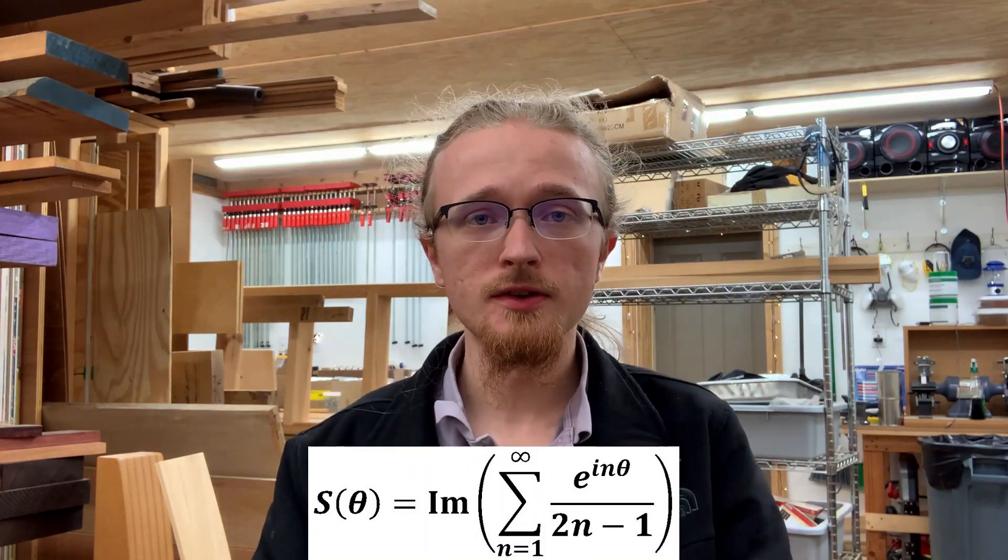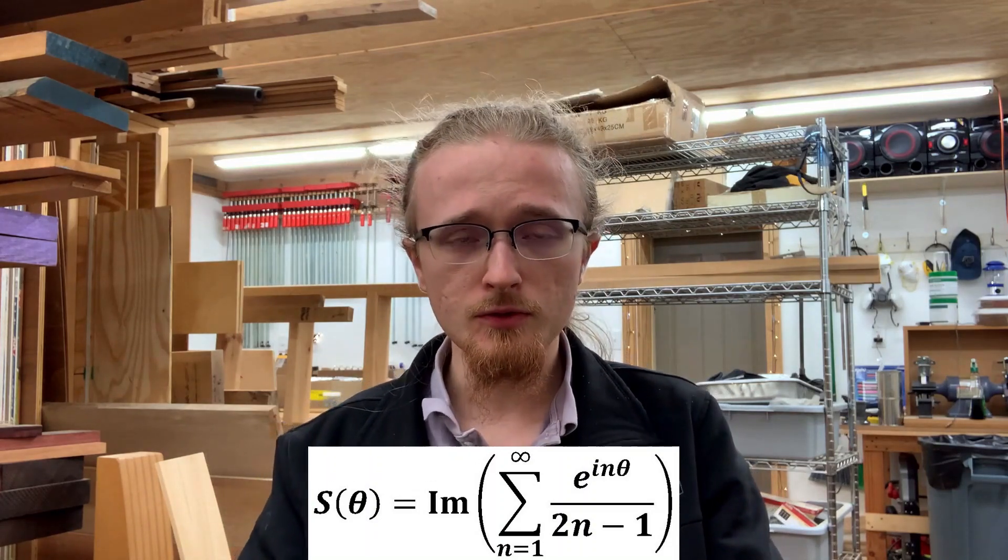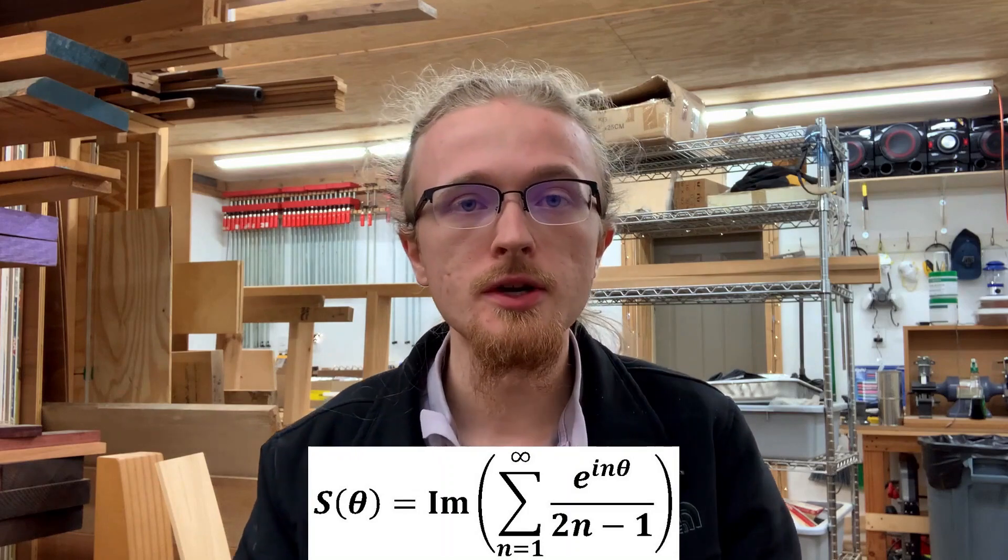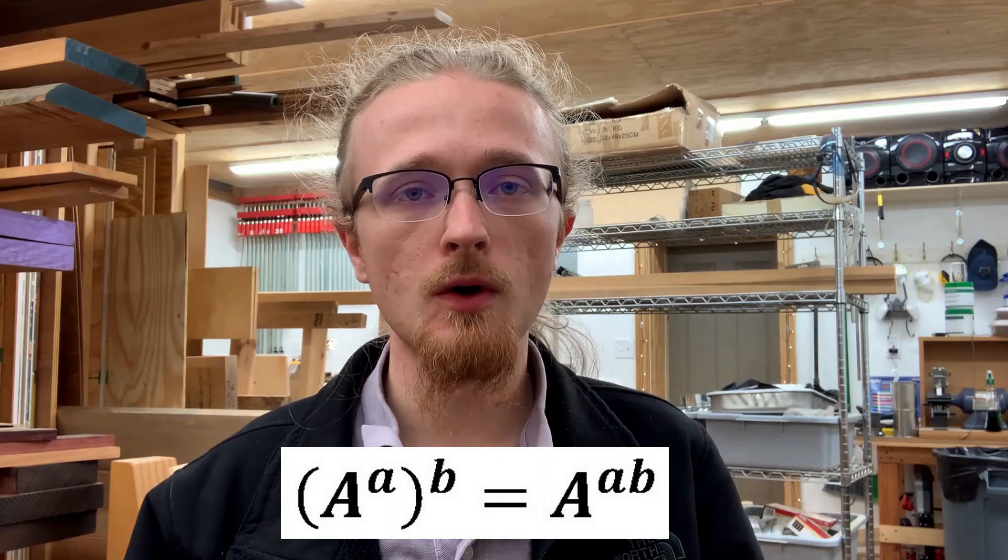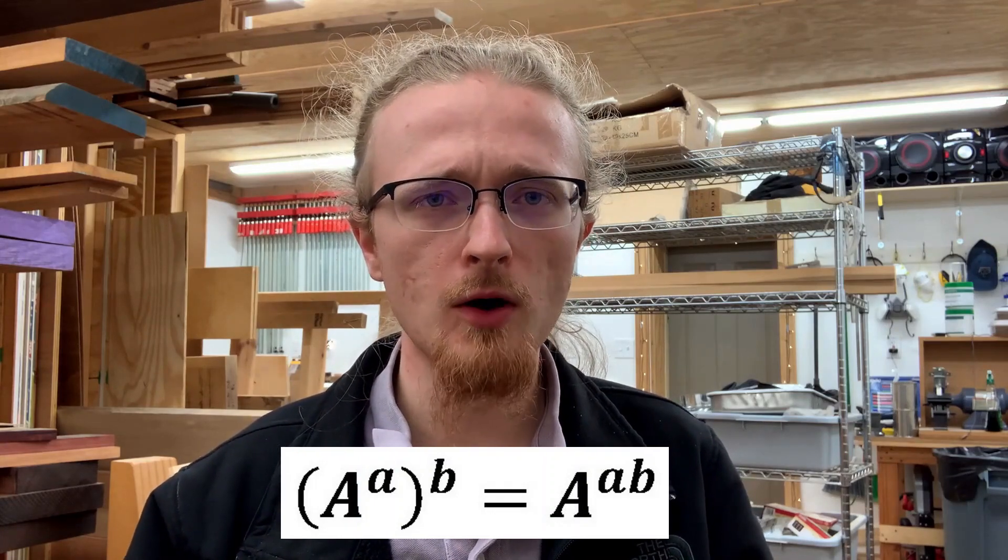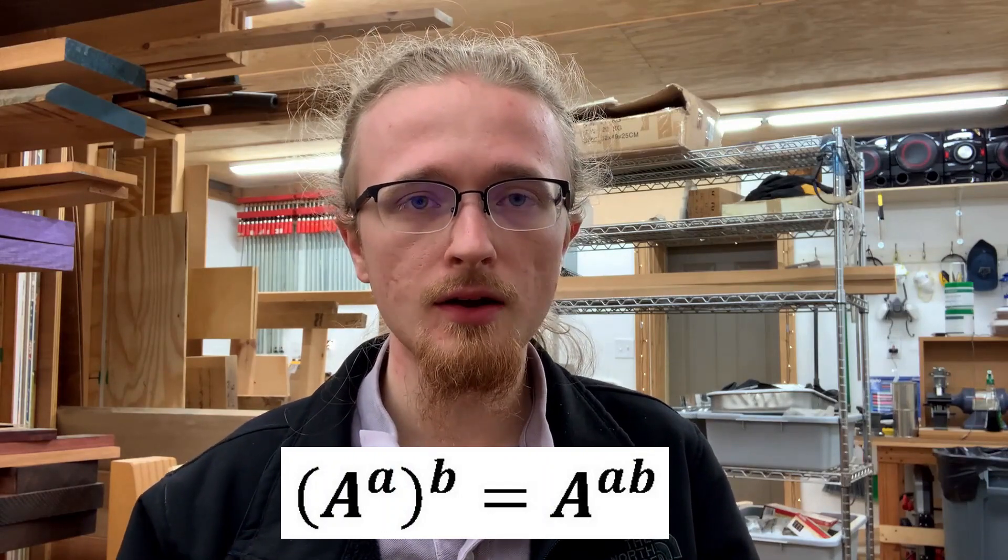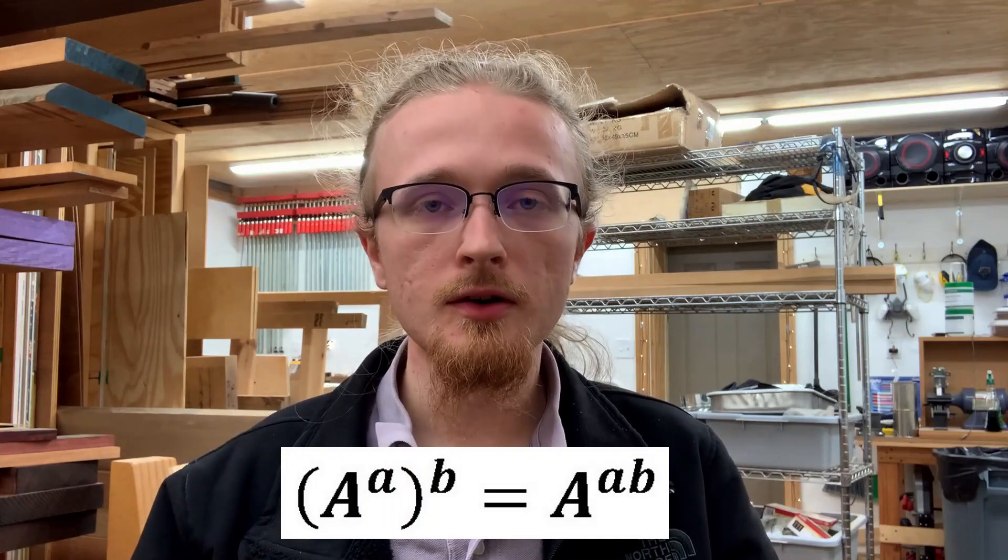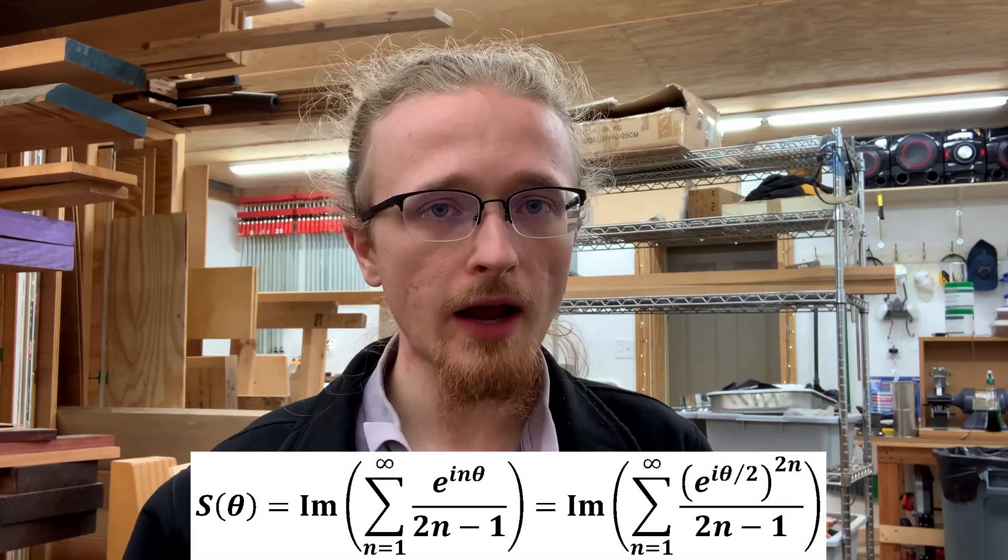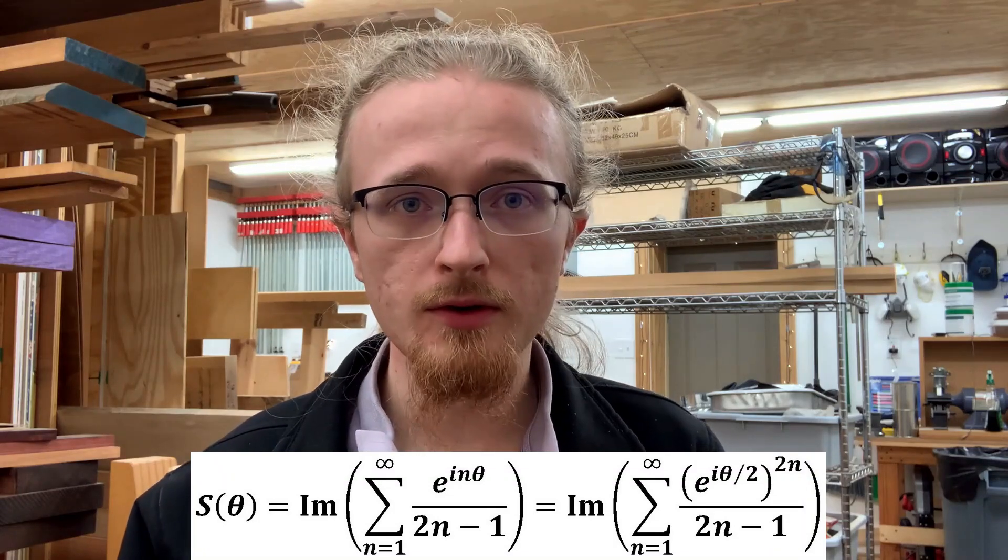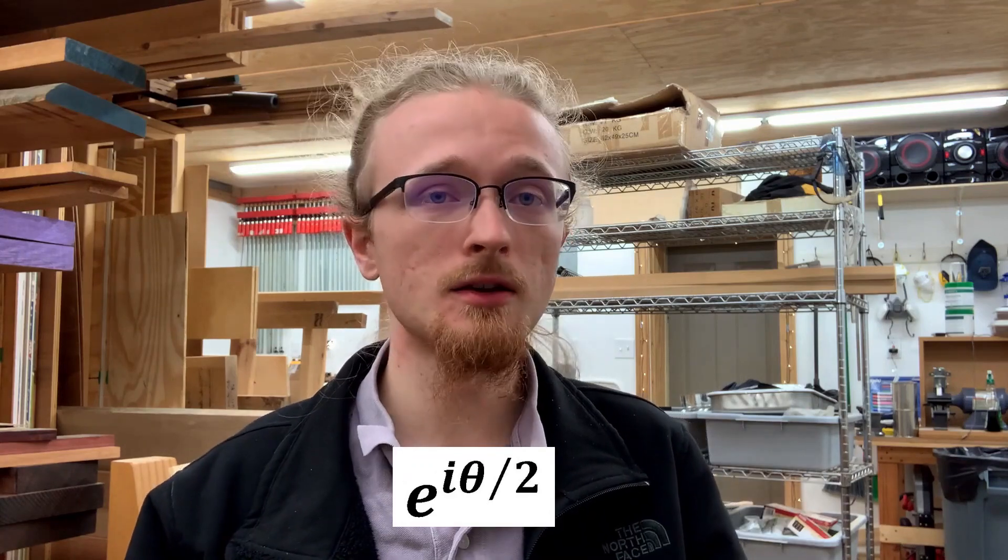But the cool thing about this is now that you've gotten the term under the sum written in terms of an exponential, you can use the rules of powers to rewrite it in a way that makes the sum much easier to do. Specifically, when you raise a quantity to a power that's already been raised to a power previously, the overall power on that thing is just a product of the two powers. Now, you can use that property here in reverse very productively. Specifically, if you pull a factor of 2n out of the exponent, then what you're left with is an infinite power series in powers of e to the i theta over 2.